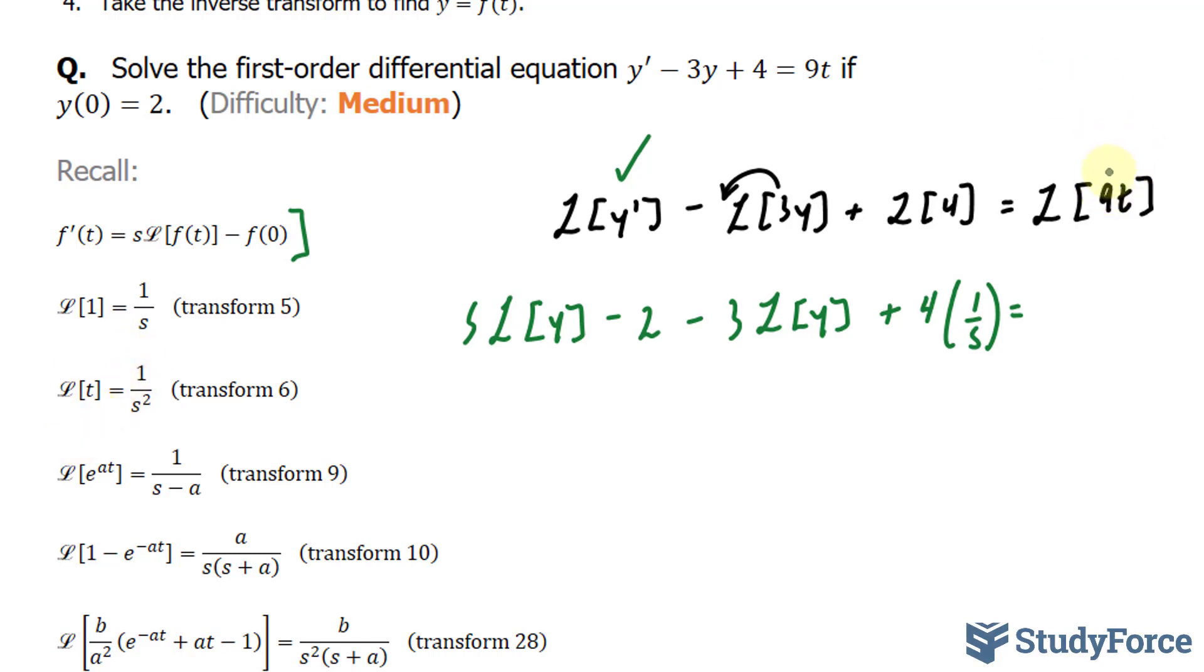In my case, it's 9, so I can pull out that 9 and replace the Laplace transform of t with 1/s², and multiply this by a factor of 9.